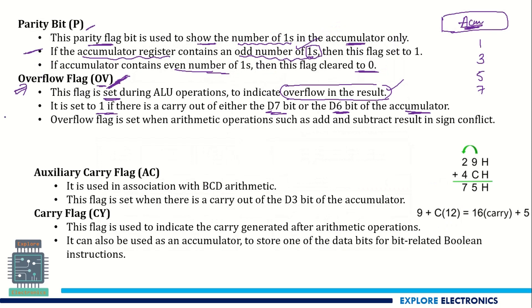And then auxiliary carry. Auxiliary carry means anyhow ALU is doing the 8 bit operation. This is an 8 bit hexadecimal number. This is also an 8 bit hexadecimal number. 2 will be represented as 0010.